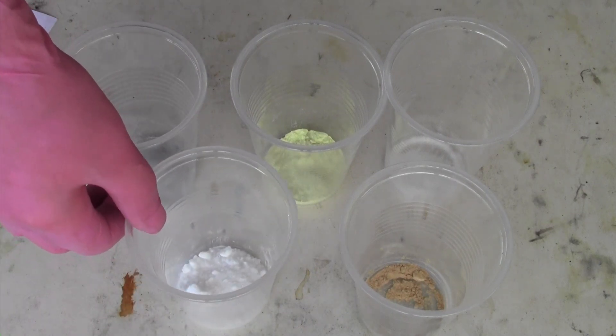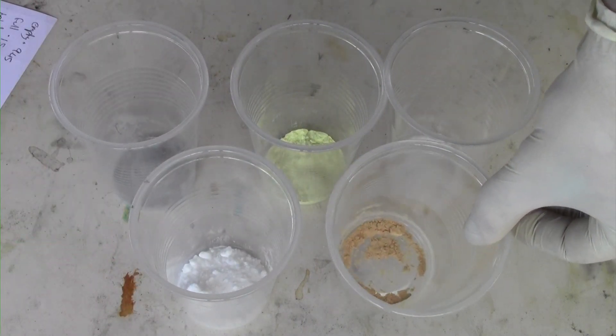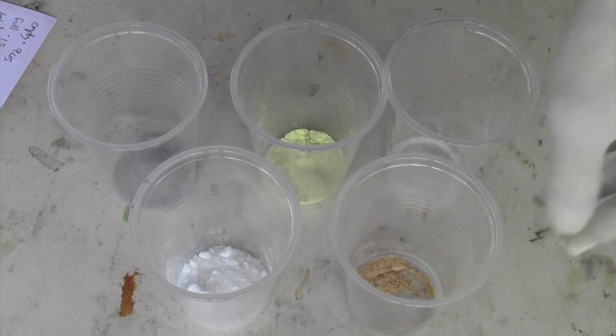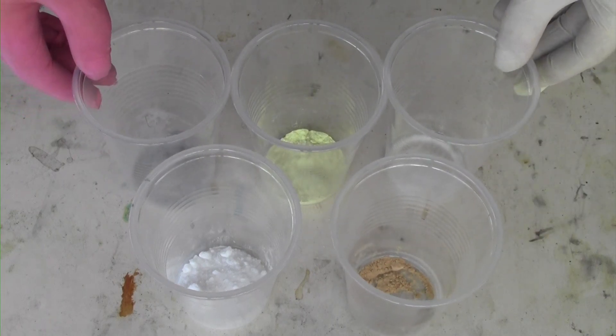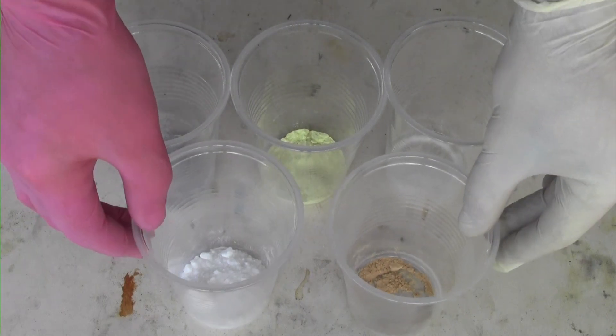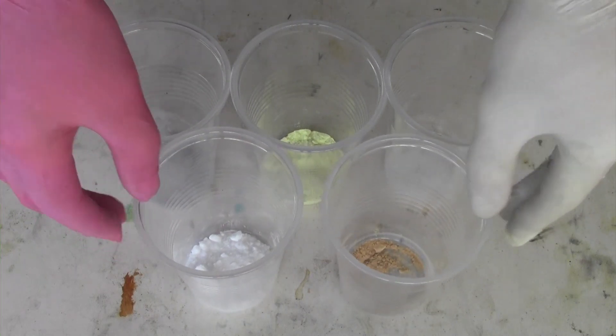You will need 51% barium nitrate, 7% potassium nitrate, 19% sulfur, 18% magnesium, and 5% dextrin all by weight. I scaled mine down just a bit to match the amount of magnesium I had.